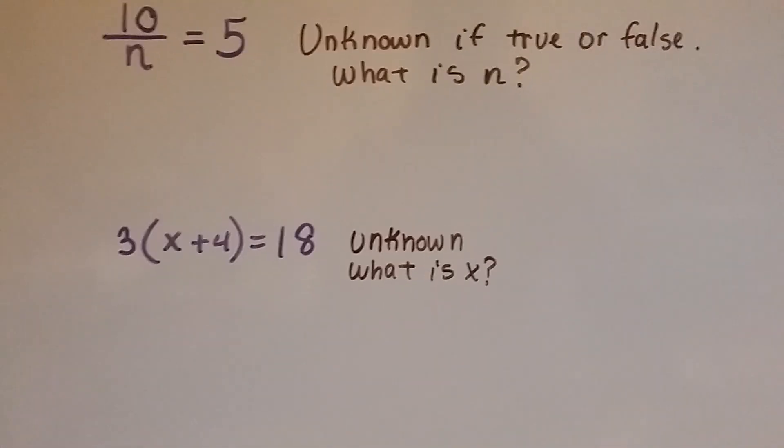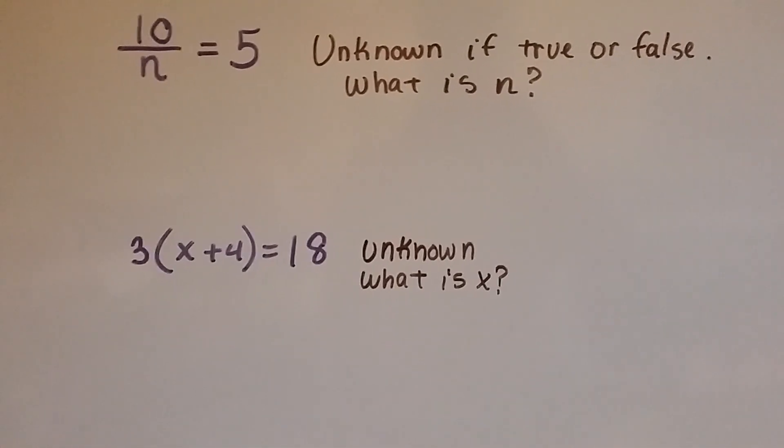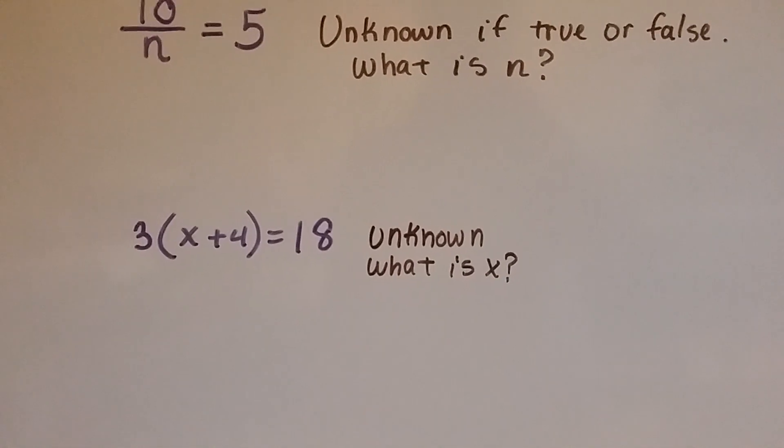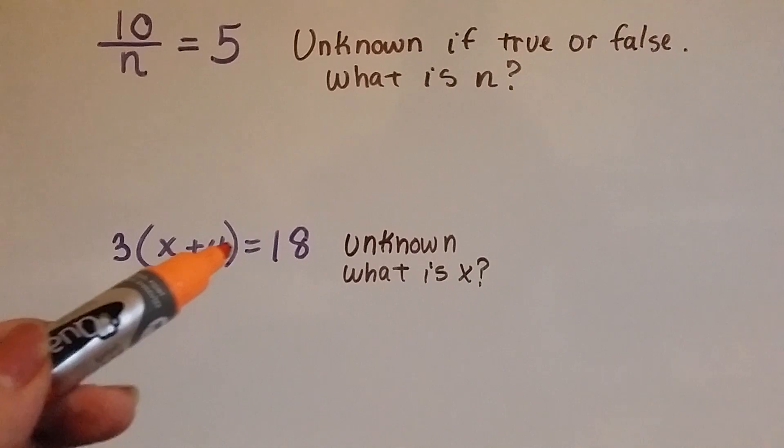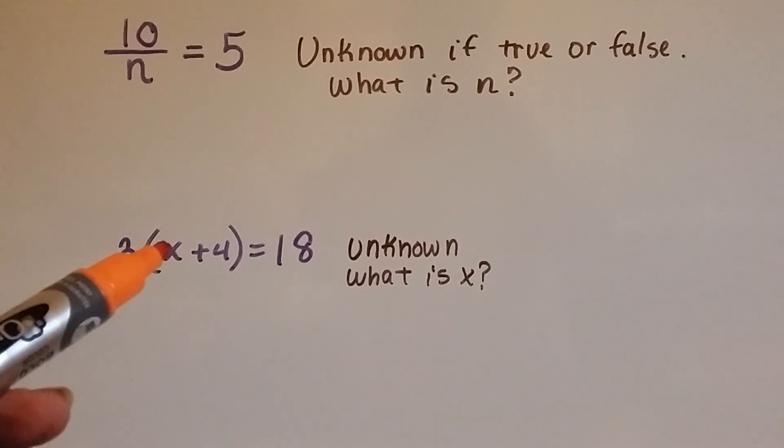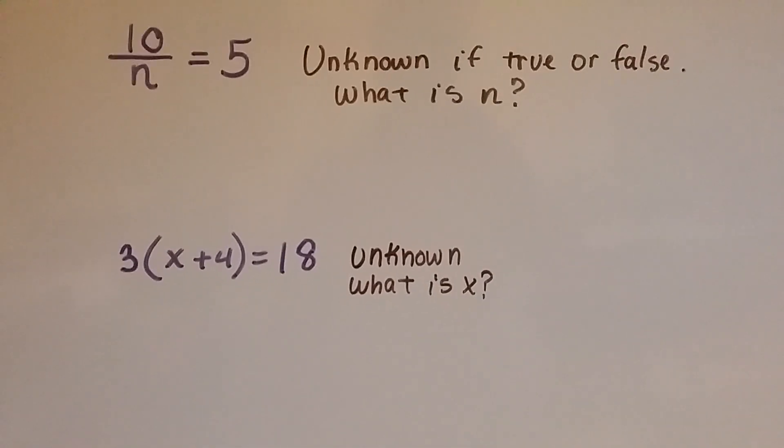How about 3 and x plus 4 in parentheses equals 18? That's unknown. We don't know what x is. If this is a 2, then that's a 6, and 3 times 6 is 18, but we don't know if x is a 2. It's unknown.